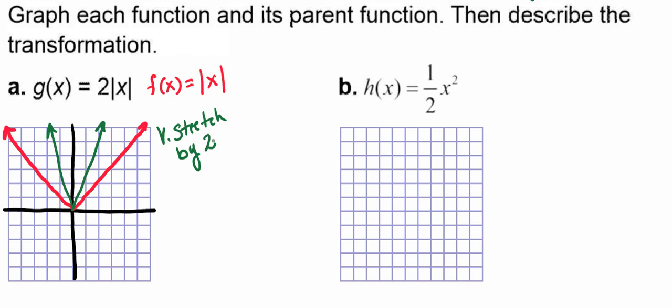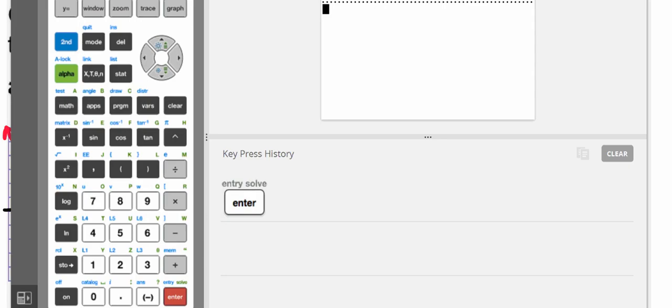Let's look at b. Here, we have an h of x, which equals 1 half of x squared. Now, because it's an x squared, that tells us that this is a quadratic equation. And so its parent function is f of x equals x squared. So let's go ahead and graph that, and let's see what that looks like. This time, we're going to use our graphing calculator.